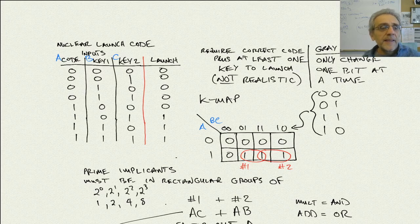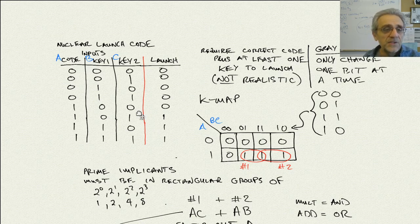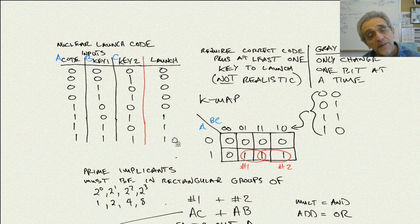Hi guys, we're back again, and today we're going to do a few examples of Karnaugh maps. The first one is a nuclear launch code truth table, and we're going to go through how to make this. It's actually in association with a movie from 1983 called War Games.